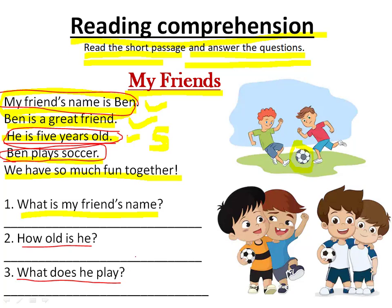Write this in your English classwork notebook. Remember: Question one — What is my friend's name? My friend's name is Ben. Question two — How old is he? He is five years old. Question three — What does he play? Ben plays soccer. Copy the answers from the passage.